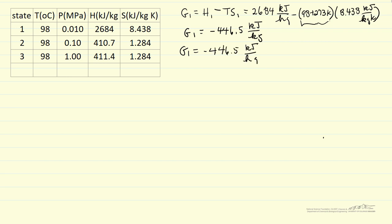So what I want to do is change kilograms to grams, one kilogram, ten to third grams, and then for water, 18 grams per mole, and this gives me a value for G1 of minus 8.037 kilojoules per mole.